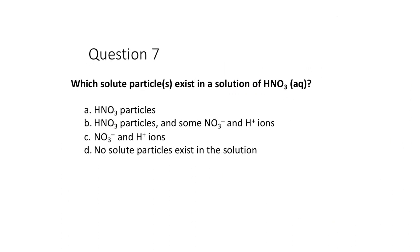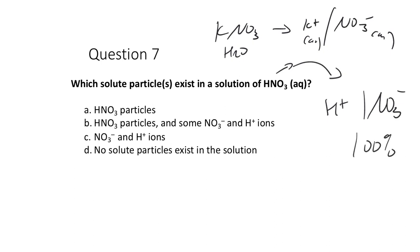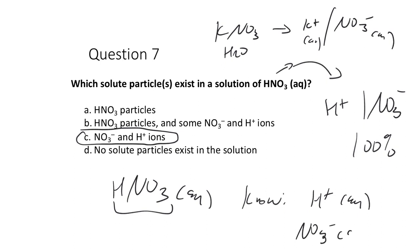Question: what solute particles exist in a solution of nitric acid? HNO₃ is a strong acid, so it completely ionizes with 100% yield to H⁺ and NO₃⁻. So the solute particles in a solution of nitric acid are NO₃⁻ (AQ) and H⁺ (AQ). You'll see HNO₃ (AQ) written often, but we must know this really means H⁺ (AQ) and NO₃⁻ (AQ).